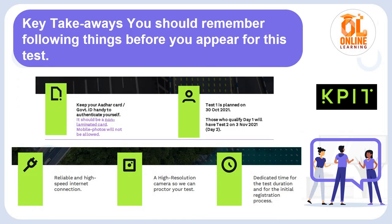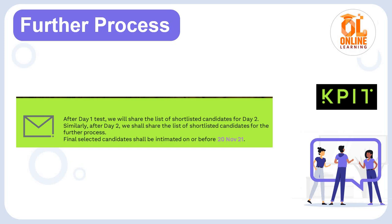Key takeaways before appearing for the test: keep your Aadhaar card or government ID handy to authenticate yourself. Test 1 is on 30 October; those who qualify Day 1 will have Test 2 on 3 November. You need a reliable high-speed internet connection and a high-resolution camera, and ensure you have dedicated time for the test duration. After Day 1, the list of shortlisted candidates for Day 2 will be shared. Final selected candidates will be notified on or before 20 November 2021.